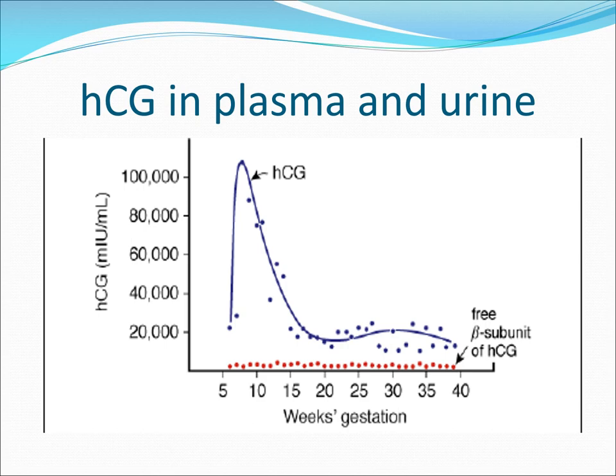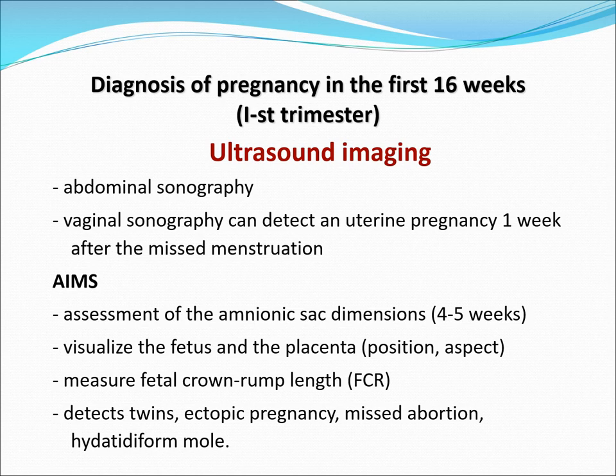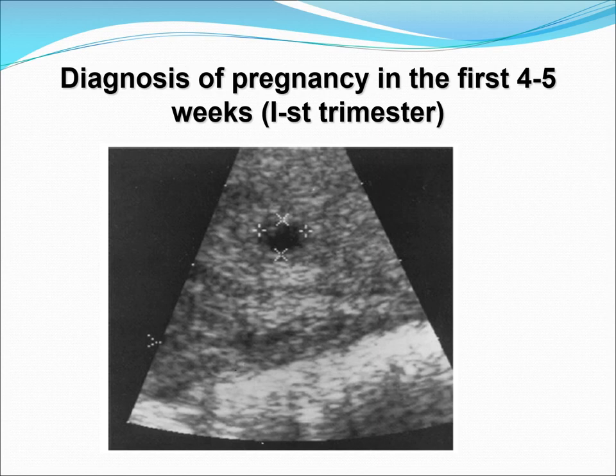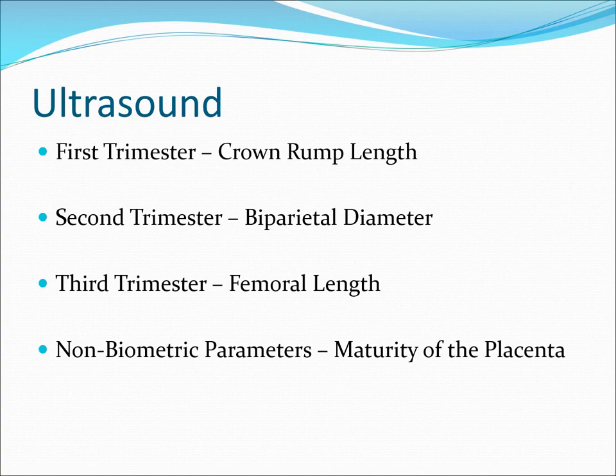Imaging is very helpful, with abdominal sonography and vaginal sonography detecting a uterine pregnancy 1 week after missed menstruation, which is usually 4 to 5 weeks. Ultrasound imaging is used for assessment of the amniotic sac dimensions, to visualize the fetus and placenta, measure fetal crown-rump length, detect twins, detect an ectopic pregnancy, or any possibility of abortion. The gestational sac can be seen as early as 4 to 5 weeks of the first trimester. Ultrasound is most reliable when done in the first trimester — the most reliable parameter would be your crown-rump length. In the second trimester, most reliable would be your biparietal diameter, and in the third trimester, your femoral length.